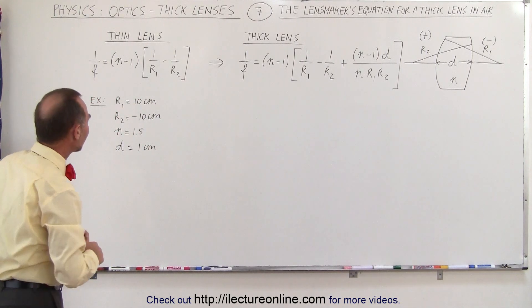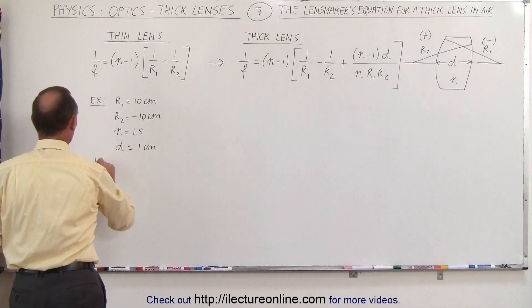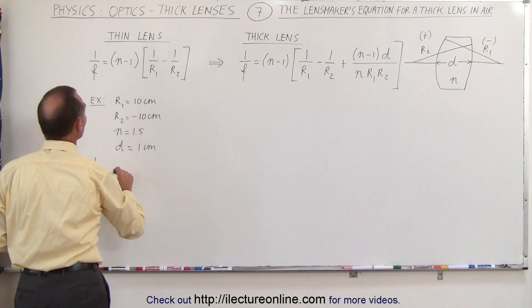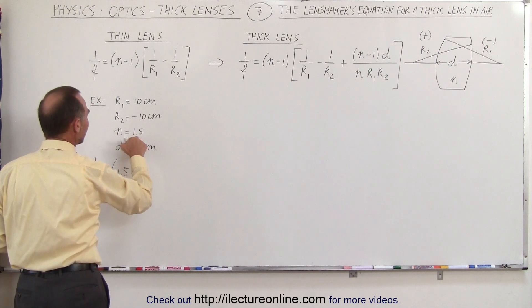Now let's see what that is like when we plug in the numbers. With the thin lens we get 1 over F is equal to 1.5 minus 1.